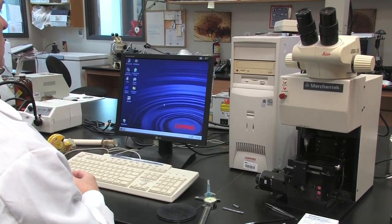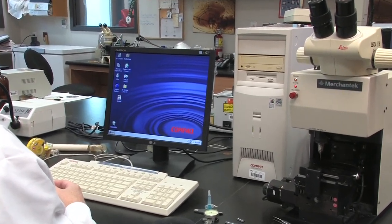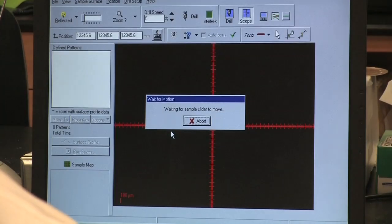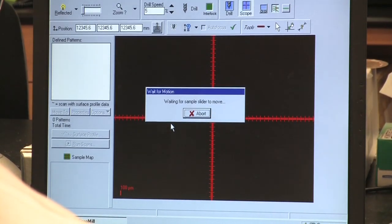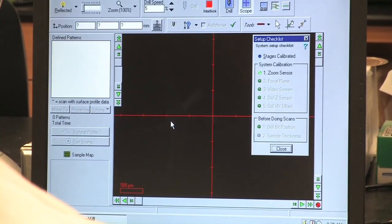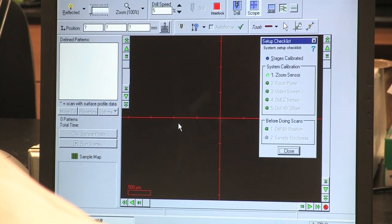Once the computer has booted up, click on the micromill icon on the desktop. As the program opens, a setup checklist window will appear on the right side of the screen and the z-axis stage will move to its upper extent.